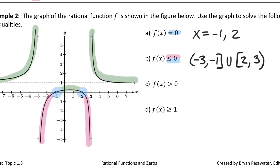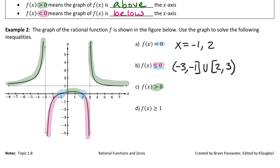Where is f(x) greater than zero? There are three green pieces, so we need three intervals in the answer. The function is greater than zero from negative infinity to -3, or from -1 to 2, or from 3 to infinity.